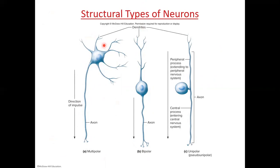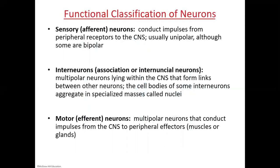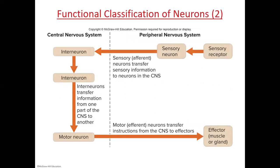Functionally, neurons are classified as sensory (afferent), interneurons, or motor (efferent). Sensory neurons conduct impulses from peripheral receptors to the CNS — usually unipolar, sometimes bipolar. Interneurons — also called association, integral, or internuncial neurons — are multipolar neurons within the CNS that form links between other neurons. Motor neurons are also multipolar and conduct impulses from the CNS to peripheral organs. This concludes the first section of notes for chapter nine.